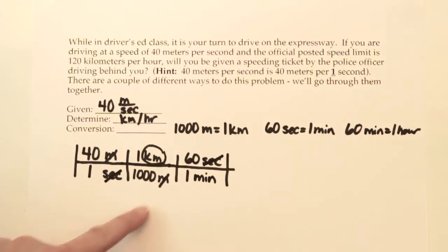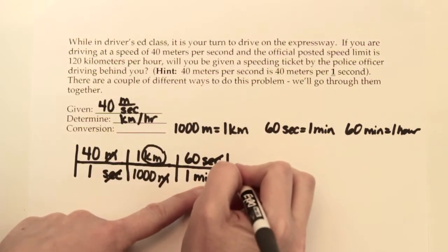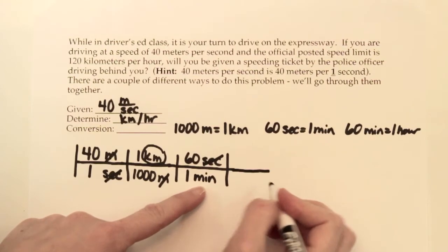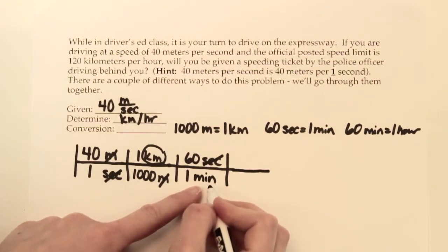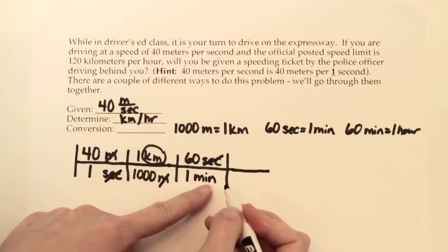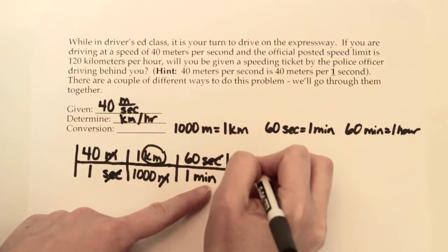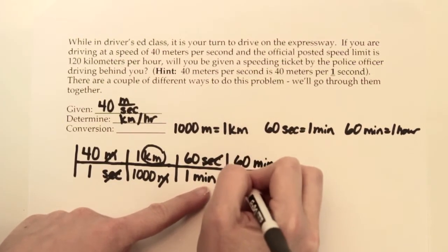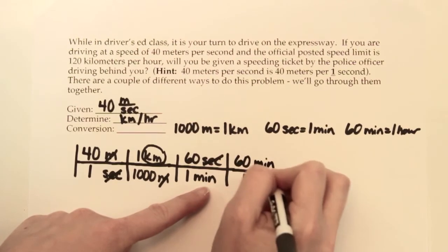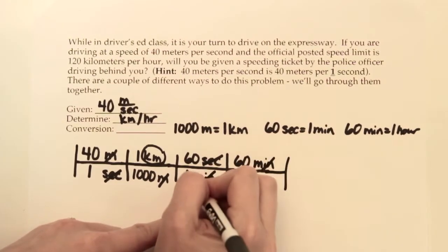If we stop the problem right now, we'd have kilometers per minute. We want kilometers per hour, so we have to keep going. We want our minutes to cancel out and go away because minutes are on the bottom. We need some minutes on the top this time. So 60 minutes in an hour. Minutes and minutes cancel.